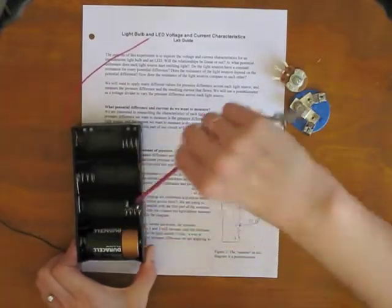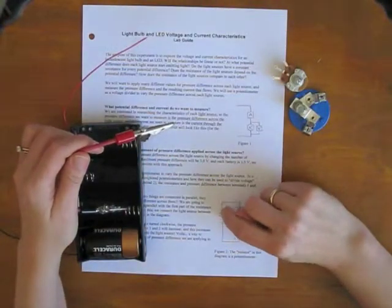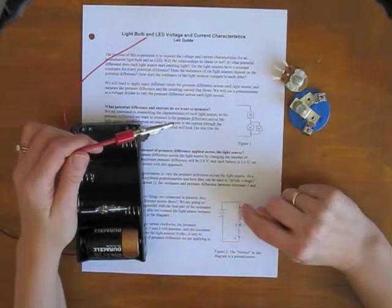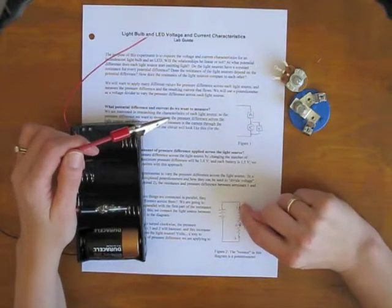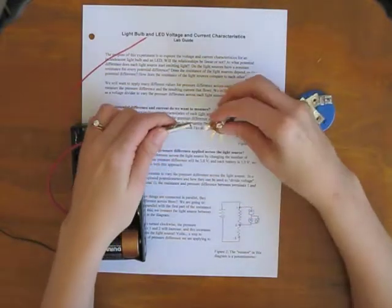And the circuit diagram shows the wire going from the positive terminal to terminal one of the potentiometer. So here's terminal one, I'm going to clip it onto there.